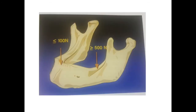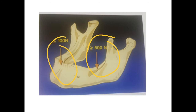Remember that we need to withstand a lot of masticatory load on the jaws — around 500 Nm of force is faced by the posterior teeth. Therefore, a wider diameter implant is required in the posterior region. You can plan a slightly smaller diameter in the anterior area.